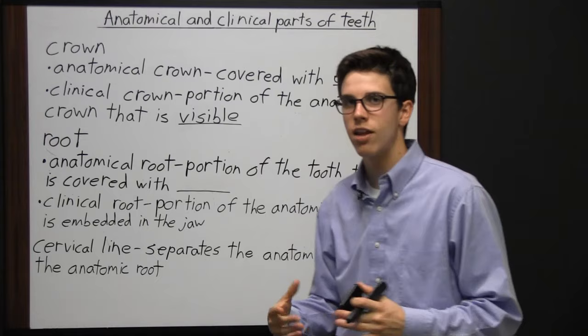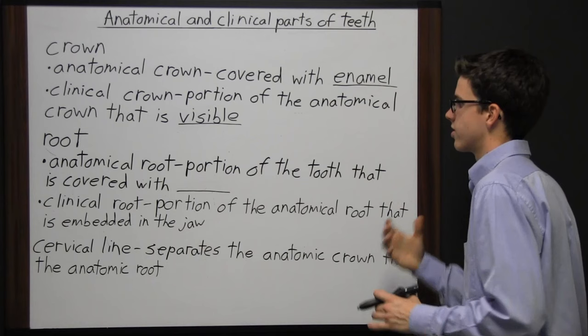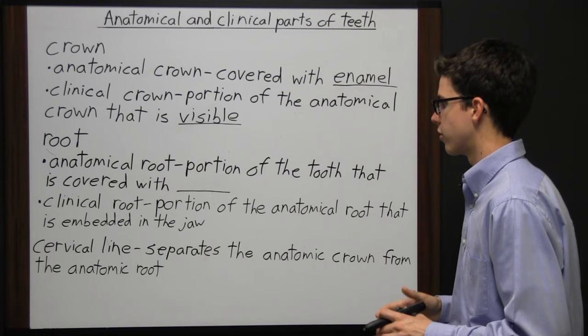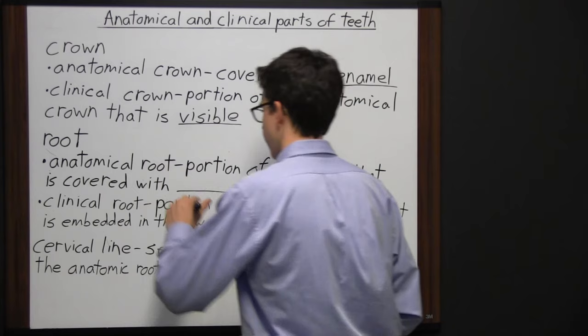The anatomical crown is a formal definition — it's always going to be the same portion of the tooth covered in enamel. However, the clinical crown could change a little bit because sometimes more of the tooth is going to be showing than others.